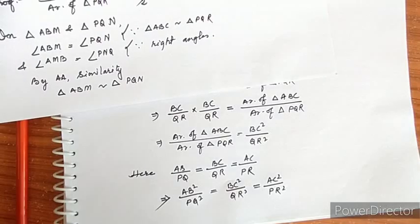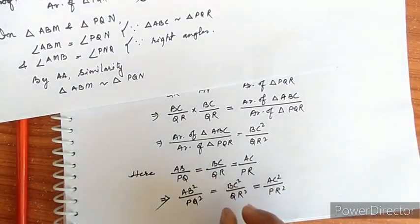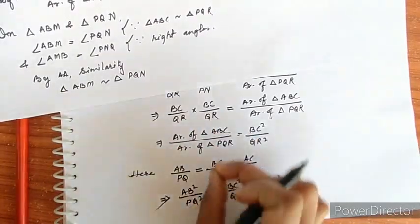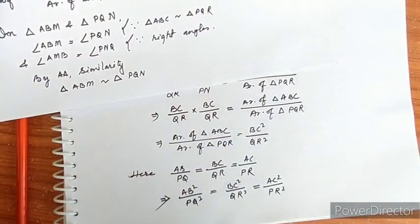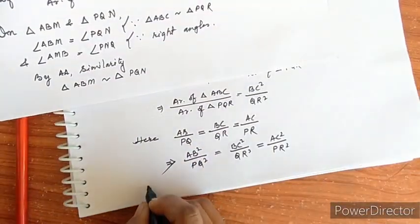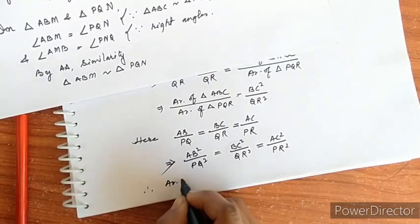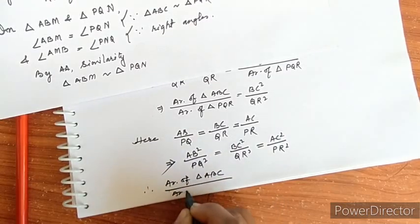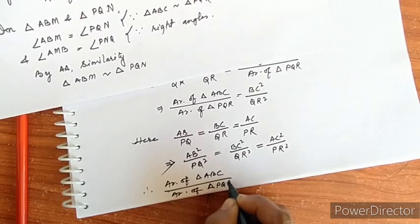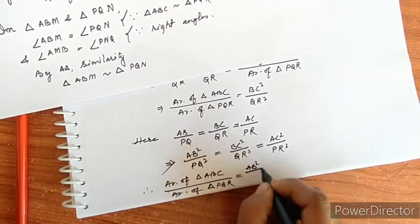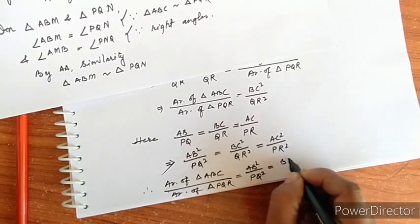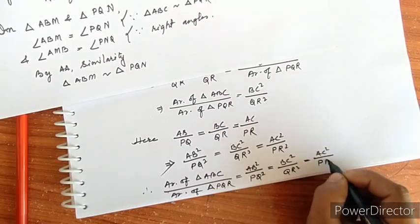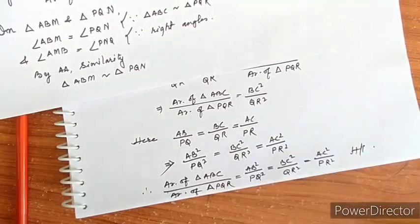Therefore, area of triangle ABC by area of triangle PQR equals AB square by PQ square, equals BC square by QR square, equals AC square by PR square. This completes the proof.